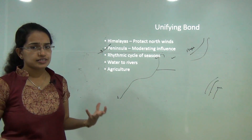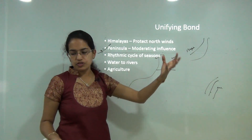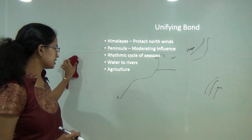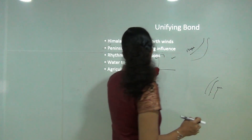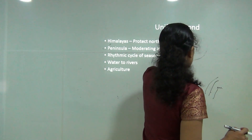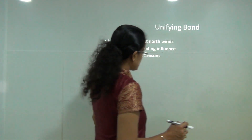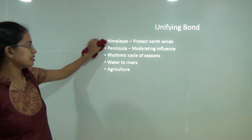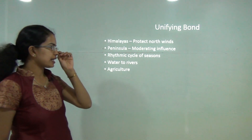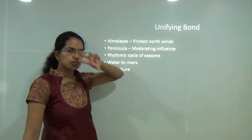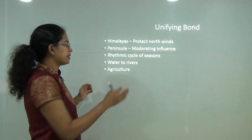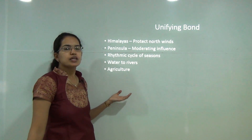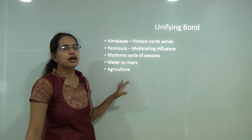Monsoons act as a unifying force for India. They bring agricultural water to rivers, reducing conflicts between regions and tribal groups, and create a rhythmic cycle of seasons with less extreme temperature variations. The Himalayas protect India from north winds and are the main driver of the monsoon phenomenon. The peninsula also exerts some moderate influence on India's climatic conditions. With this, we have covered the fourth chapter, with two more remaining chapters for class 9.